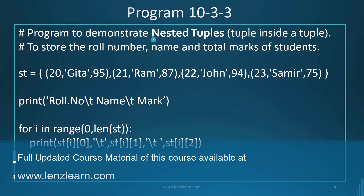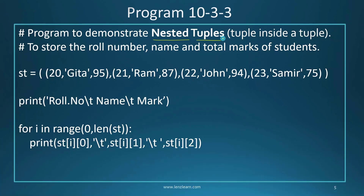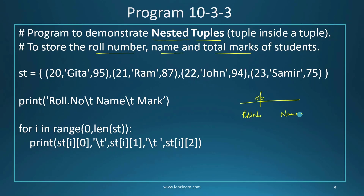Now we learn the concept of nested tuples — tuples inside another tuple. In this program, we store the roll number, name, and total marks for each student. I store records for four students: geetha, ram, john, and samir. For example, 20 is the roll number, then the student name, then 95 is the total mark that geetha has scored. The aim is to print the values stored inside the student tuple called 'st'.